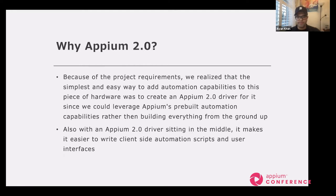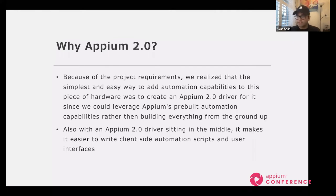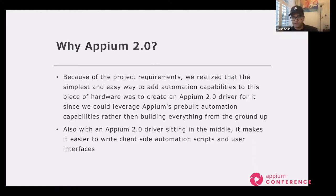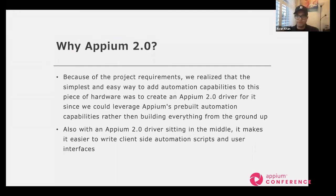For the project, the reason we chose to develop an Appium 2.0 driver was that we realized the simplest way to add automation capabilities to any piece of hardware was to create an Appium 2.0 driver for it. That way we could leverage Appium's pre-built automation capabilities rather than building everything from the ground up. Also, with an Appium 2.0 driver sitting in the middle between the hardware control system and the client side, it made it easier to write client-side automation code since it only had to interact with the Appium 2.0 driver and not the detailed control system code.